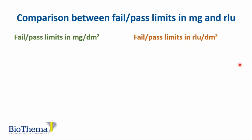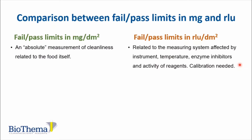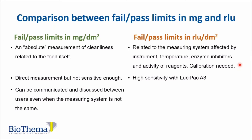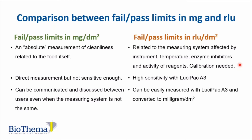What is the difference between having fail-pass limits in milligram versus RLU? In milligram per square decimeter, we have an absolute measurement of cleanliness related to the food itself. With RLU, measurements are affected by the instrument, temperature, enzyme inhibitors, and activity of the reagents, so calibration is needed. Milligram is a direct measurement but not sensitive enough on its own. With LUCIPAC A3 we have high sensitivity, and milligram values can be communicated between users even when the measuring system differs. LUCIPAC A3 can easily be measured and converted to milligram per square decimeter.